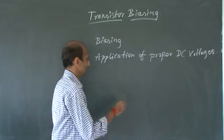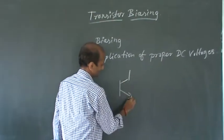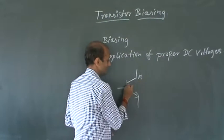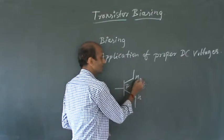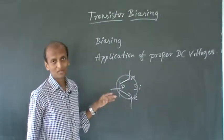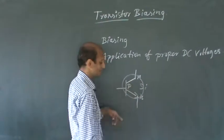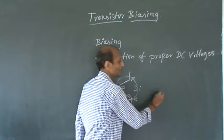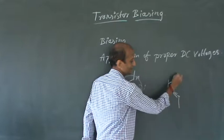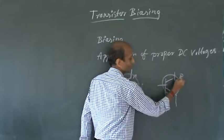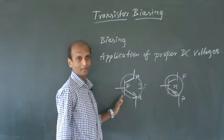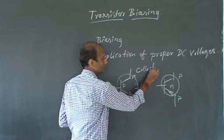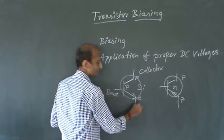A transistor has three terminals. I have shown an NPN transistor — it can be of silicon or germanium. I have taken a silicon NPN transistor, where the arrow element shows the direction of current. We also have the PNP transistor. The three terminals are: collector, base, and emitter.